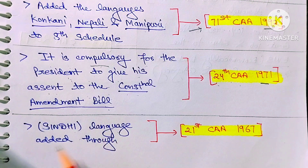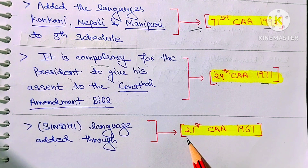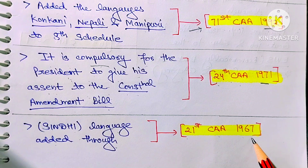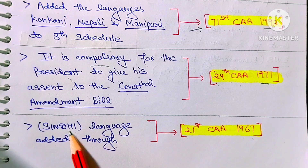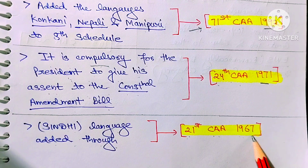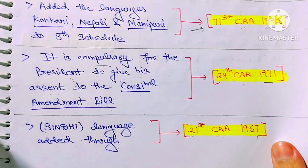Next: the Sindhi language was added through the 21st Amendment Act 1967. Sindhi language was added to the 8th Schedule under the 21st Amendment Act 1967.